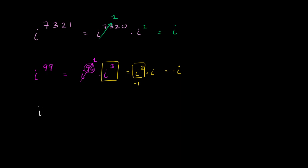Let's do one more: i to the 38th power. This equals i to the 36th times i squared, since 36 is the largest multiple of 4 that fits into 38, leaving a remainder of 2. i to the 36th simplifies to 1, and we're just left with i squared, which equals negative 1.